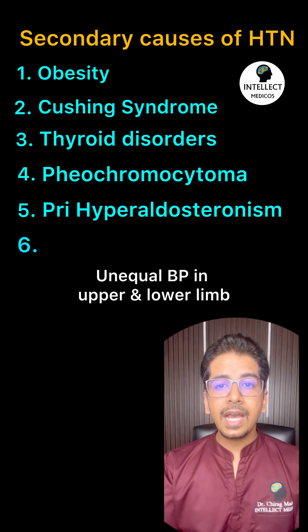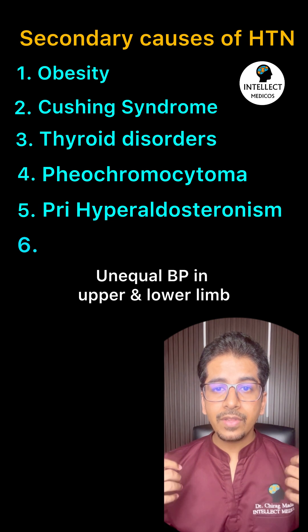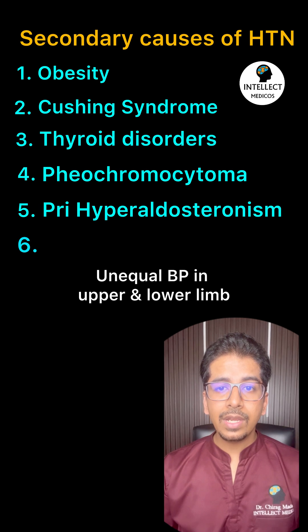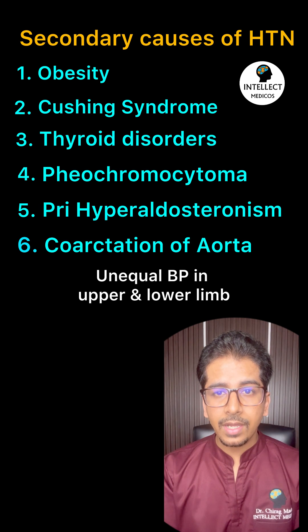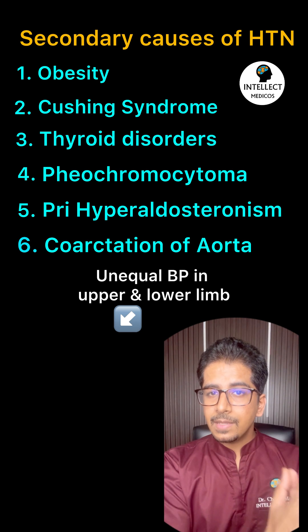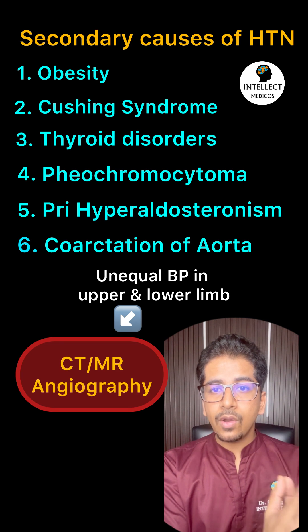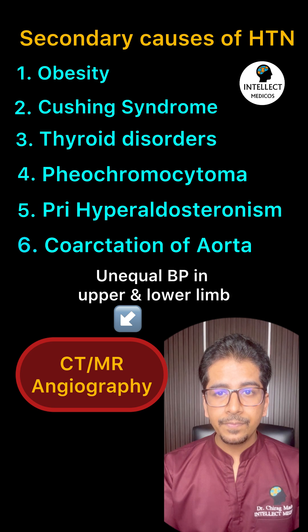Sixth, if there is unequal blood pressure between the upper limb and the lower limb, think about coarctation of the aorta and send the patient for CT or MR angiography.